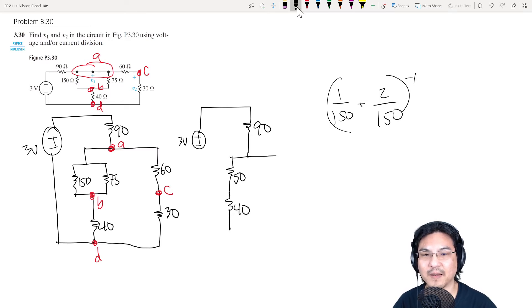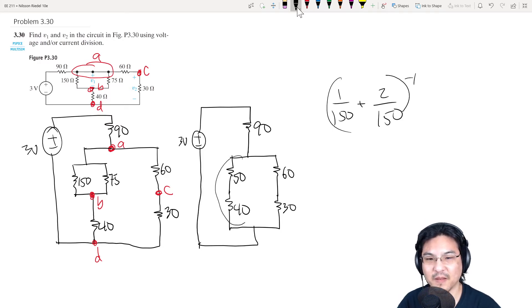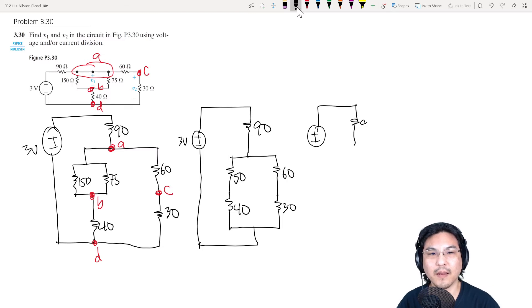All right, and then let me just redraw these. Okay, so 50 and 40 in series is 90, 60 and 30 in series is 90, so 90 and 90 in parallel is 45. So it's like 90, 45,